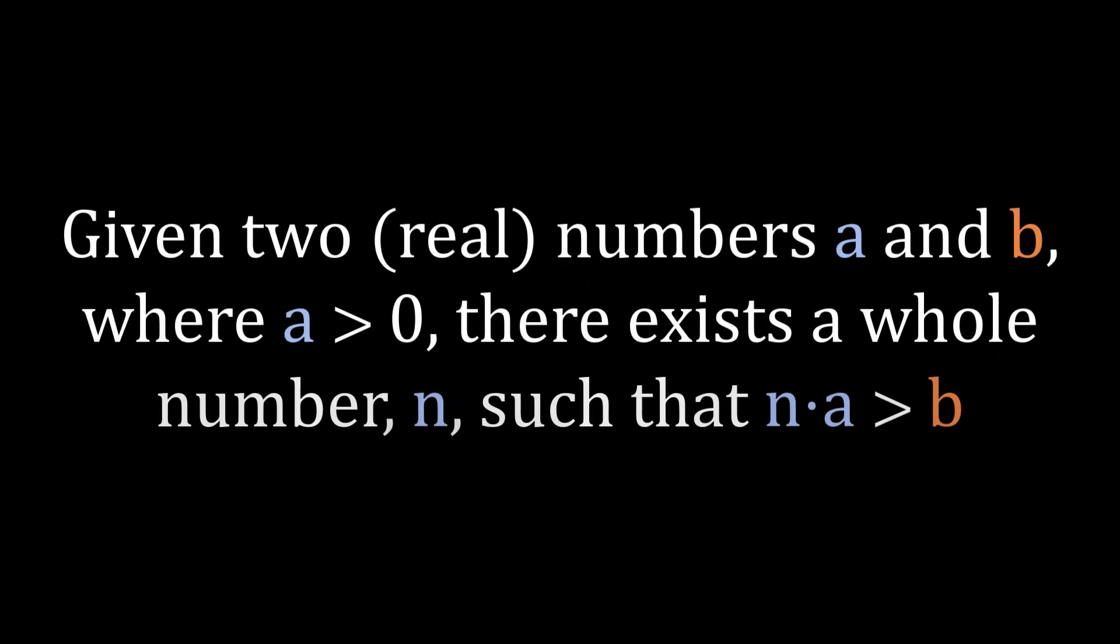One other thing. What's nice here with the numerical statement of the property is that we can move things around without losing any truth. So we can move, say, this N to the right side here, and then we see that for any A and B, where A is still positive, there's some whole number in N that can divide B to be less than A.